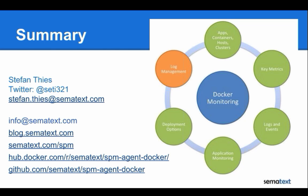Next question: what is the footprint of your container? The SPM agent for Docker is implemented in Node.js, so it runs with memory usage of about 50 megabytes. CPU usage is low — as Node.js is doing async IO, you are typically under 1% CPU usage with this agent.